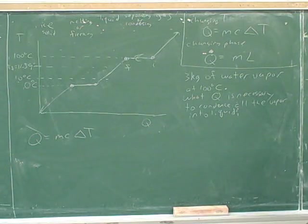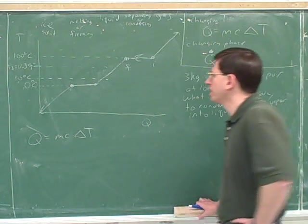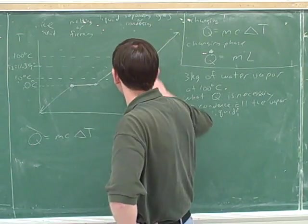We have three kilograms of water vapor at 100 degrees Celsius. What Q is necessary to condense all the vapor into liquid? First thing to do is to figure out what our initial and final points are in our picture.